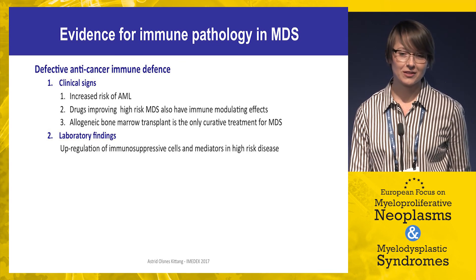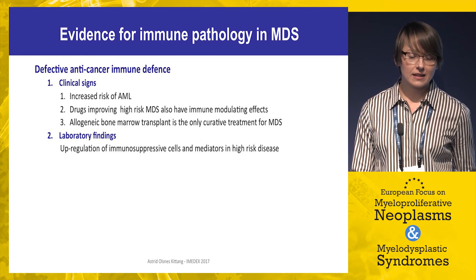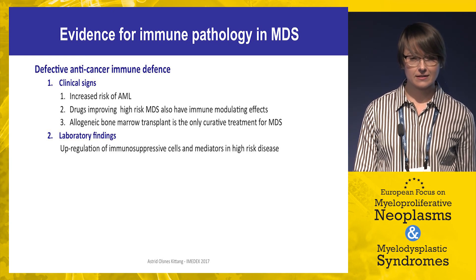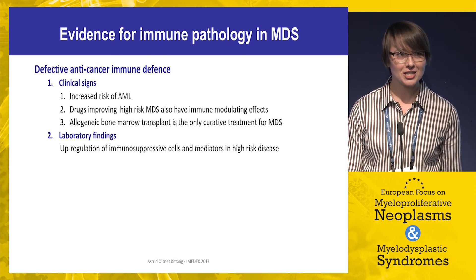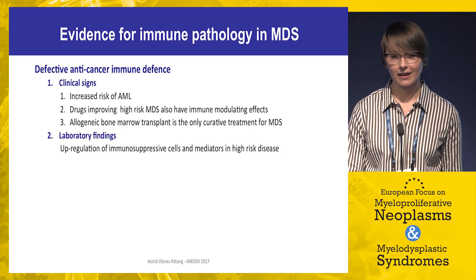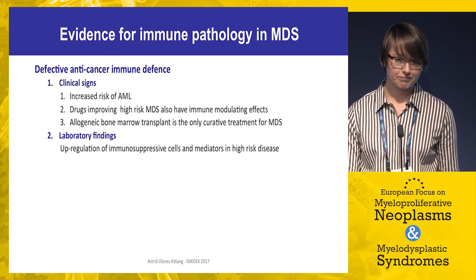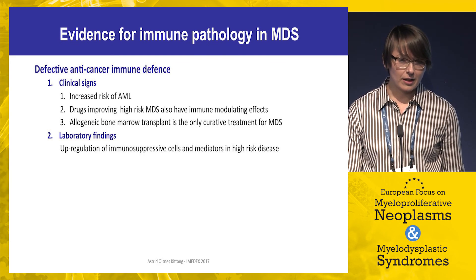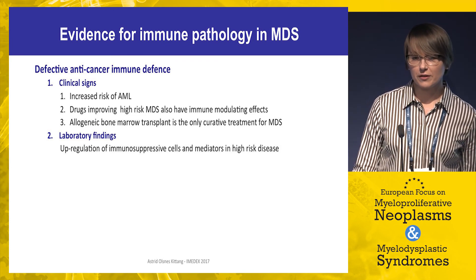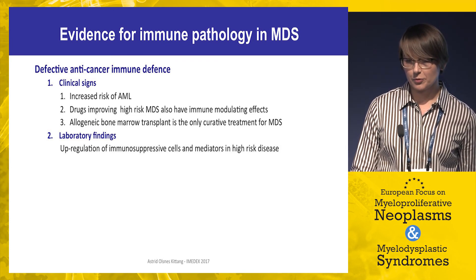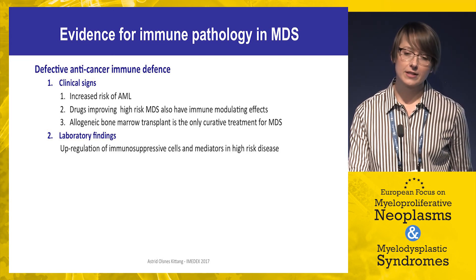To cure MDS, you actually need to change the immune system — to replace it with a healthy immune system by allogeneic bone marrow transplant. In the laboratory, evidence for defective cancer immune defense includes upregulated immunosuppressive cells and mediators, which are mostly seen in high-risk disease.